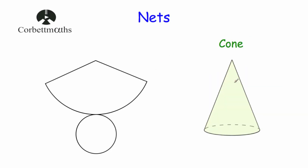Our next 3D shape is a cone. This is our cone — it has a circular base and a curved face. The net of the cone has the circle which is the circular base, and then a sector which folds around to be the curved face. This line would join up with this line and fold around to form the curved face. So this is the net of a cone.